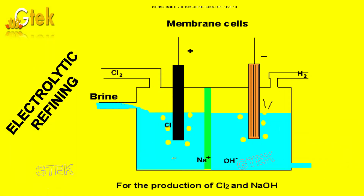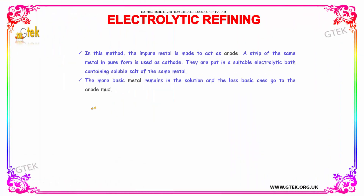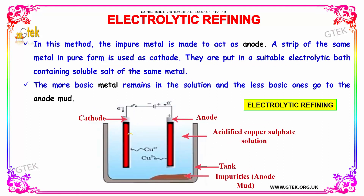The other method is electrolytic refining. In this method, the impure metal is made to act as the anode. A strip of the same metal in pure form is made as the cathode. They are put in a suitable electrolytic bath containing a soluble salt of the same metal. The more basic metals remain in the solution, and the less basic metal ones go on to the anode mud.